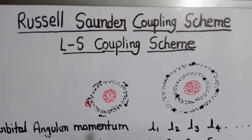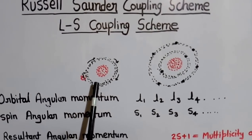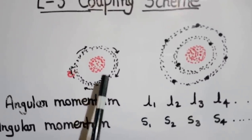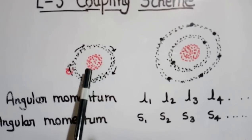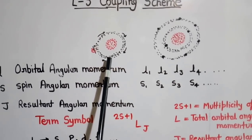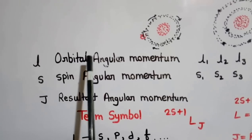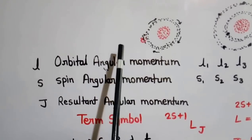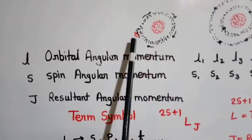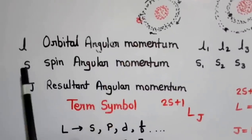In order to understand this scheme, we will firstly look at the structure of the atom. As we know, there is a nucleus at the center and electrons move around this nucleus in various subshells. An electron moving around the nucleus in a shell will have a definite angular momentum, known as orbital angular momentum, denoted by L. The electron also spins around its own axis, making it like a small magnet, and this angular momentum is known as spin angular momentum, denoted by S.